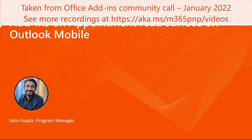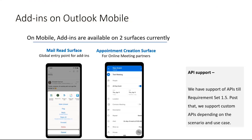Just to first give a very quick background. Currently on Outlook mobile, add-ins are supported on two key surfaces. The first surface is the global entry point, which is a mail read surface, where when you tap on the three dots on the overflow menu, you see the add-ins here. The other surface is the appointment creation surface, which is specifically for online meeting partners like Zoom, Webex, et cetera. In terms of API support, currently we have support for API requirements at 1.5. Post that, we have been supporting APIs depending upon certain scenarios and use cases, so we're not really following the requirement set approach as of now and being very scenario-specific, which makes more sense on Outlook mobile.